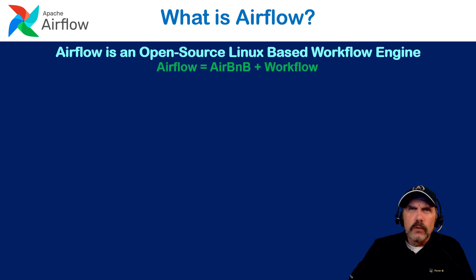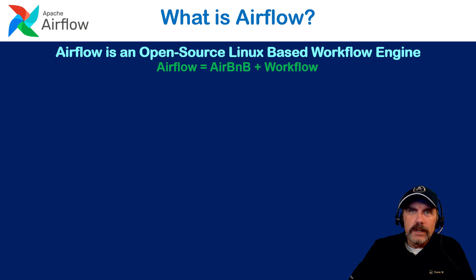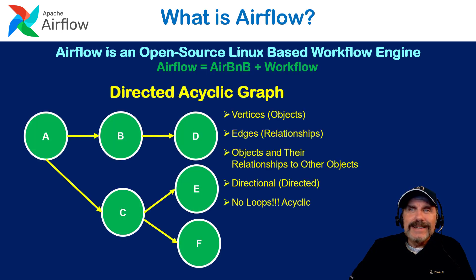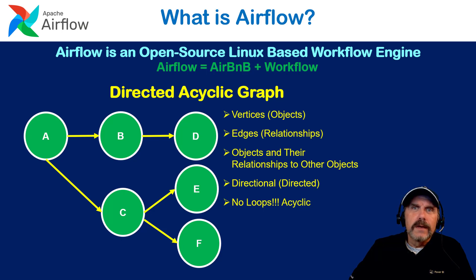Why does it have such a cool name? The reason is that it was created originally by Airbnb. They open-sourced this workflow engine, and when you take part of Airbnb and put it with Workflow, you get Airflow. The idea behind it — which is a pretty cool idea — is defining the workflow itself using a directed acyclic graph. You can think of this kind of graph as used in social media: Mary connected to Bob and Harry, Harry connected to Mary Sue and Lisa, and on and on. There's a hierarchy of relationships.